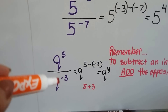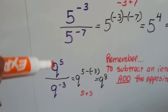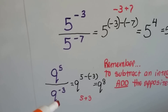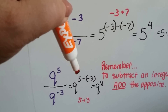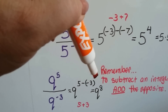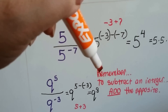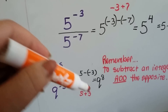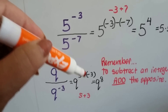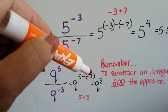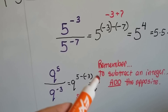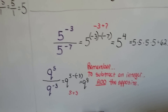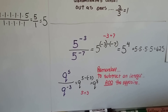What if it's a positive number and then a negative number? So we've got q to the 5th power divided by q to the negative 3rd. That's q to the 5th power minus negative 3. Because we're subtracting, we add the opposite: it becomes 5 plus 3, so the minus sign becomes a plus sign and the negative 3 becomes a positive 3. It becomes q to the 8th power. Remember this from 7th grade: we add the opposite when we're subtracting integers.